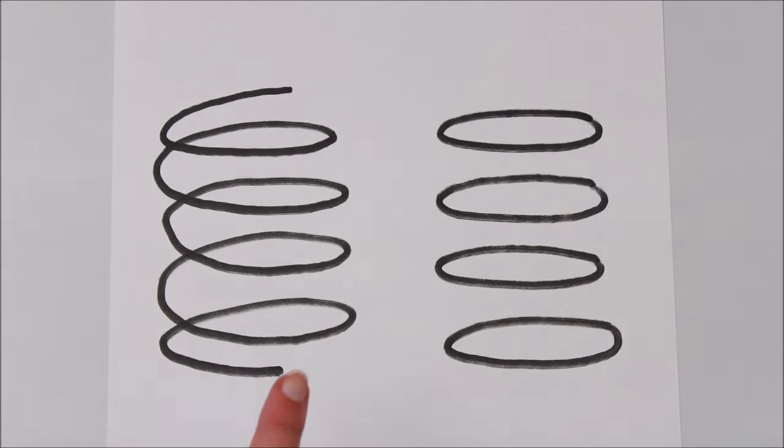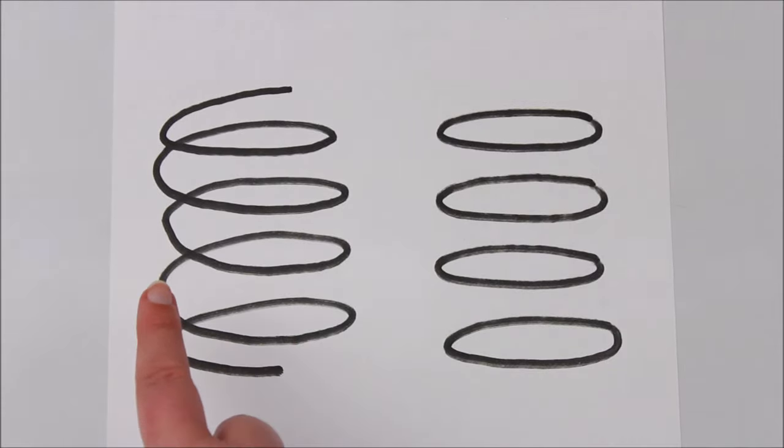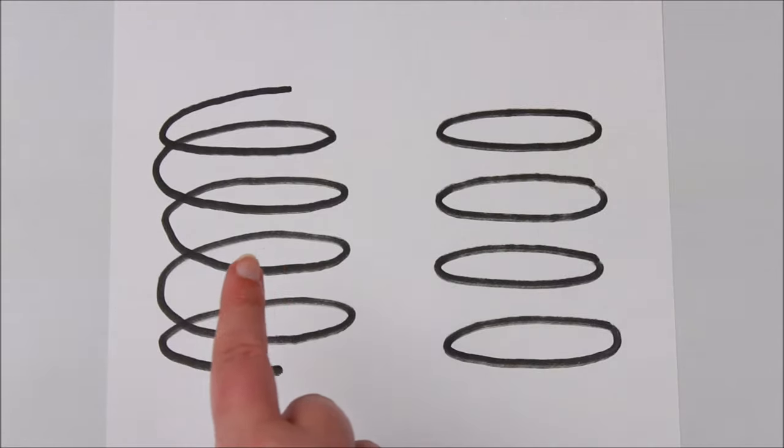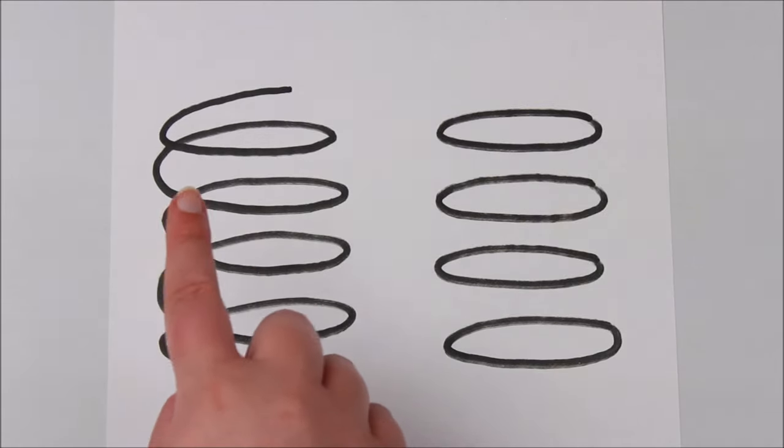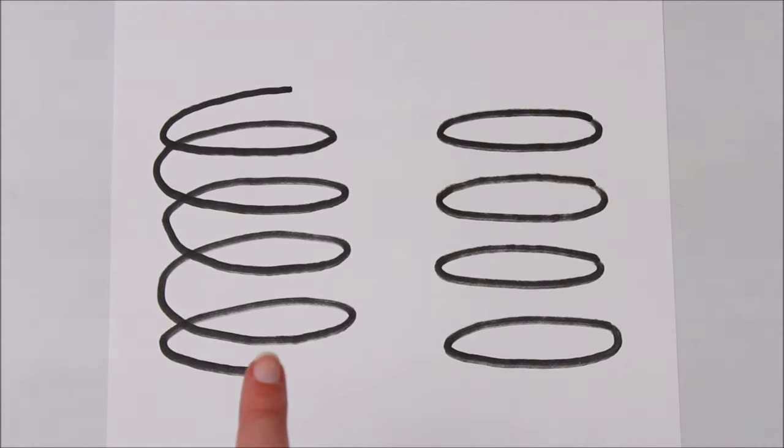When we knit in the round we're actually working in a sort of spiral format. We come around to our beginning of round point and then the next round begins and the start and end of the round are two stitches directly next to each other and then each round just builds on top of the other like a spiral, just as we've got demonstrated here.